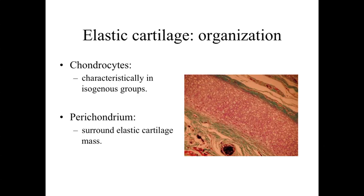Like hyaline cartilage, elastic cartilage has a perichondrium — a connective tissue layer surrounding the cartilage mass.